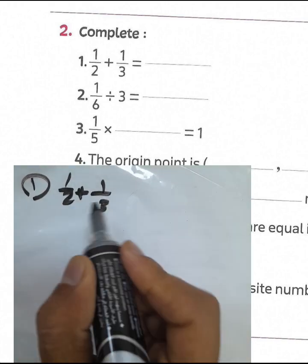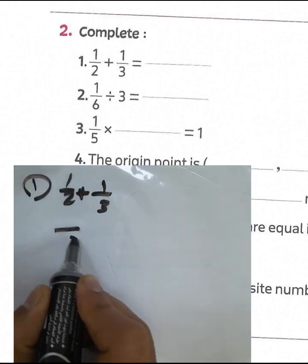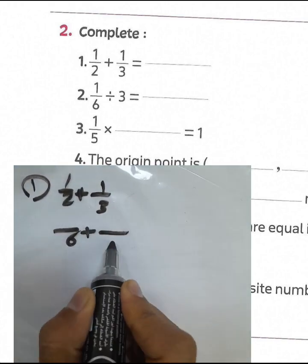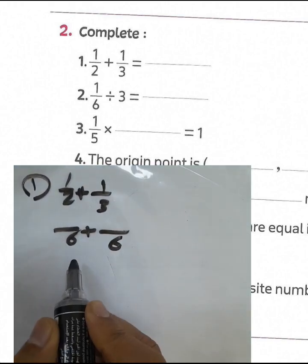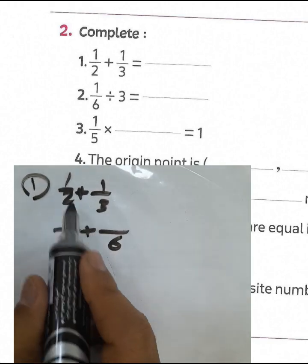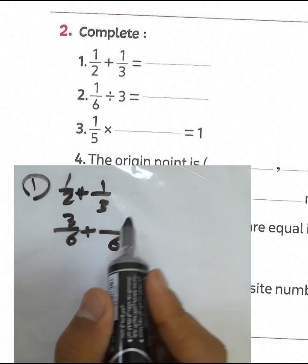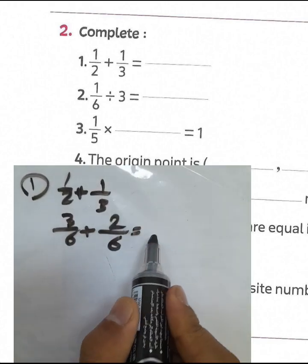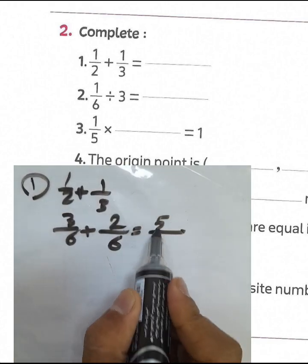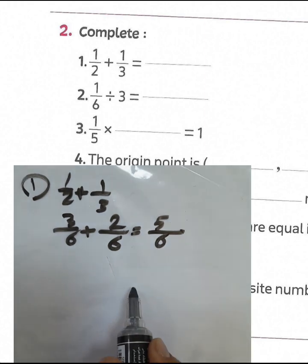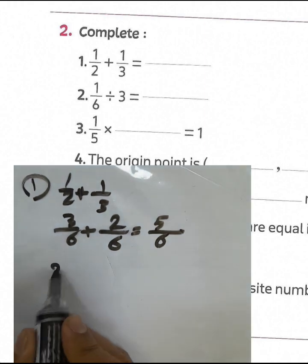Half plus a third. We can write 6 in the denominator and do multiplication between the numerator and 6. 3 times 1 equals 3, and 2 times 1 equals 2. Then the result will be 5 over 6.